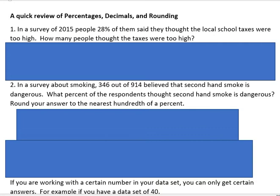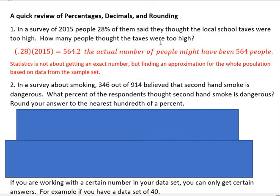Hopefully you know how to solve it, and that is to take the 2015 and multiply by 28%. When you multiply by a percent, you can use your calculator with the percent button, or change it into a decimal and multiply by 0.28, because you just move the decimal two places to the left. So if you take 0.28 times 2015, you get 564.2.